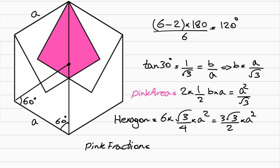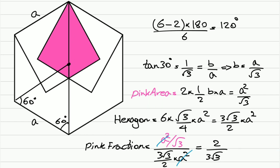Now we can find the pink fraction. It's the pink area — a squared over square root 3 — divided by the area of the hexagon, 3 square root 3 over 2 times a squared. A squared cancels out, and this will be 2 over 3 square root 3 times square root 3, which is 2 over 9. That's the answer.